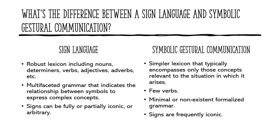Signs can be either partially or fully iconic, or they can be arbitrary. An iconic sign is like an onomatopoeia in a spoken language — the sign gives you a visual cue as to what you're talking about. A great example is the sign for moose, formed by spreading all five fingers, putting your thumbs at your temples, and extending your hands up and away from your head as if indicating antlers. An arbitrary sign doesn't have that visual cue. For example, the sign for 'name' uses two fingers extended in a blessing sign with thumbs down, tapping the two fingers together in an X shape — there's no visual cue, so it's arbitrary.